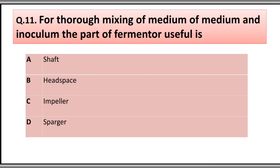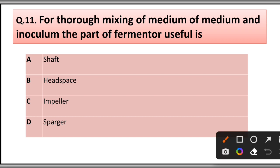Question number eleven: For thorough mixing of the medium and inoculum, the part of the fermenter that is useful is: A) shaft, B) headspace, C) impeller, D) sparger. The correct answer is option C, impeller.